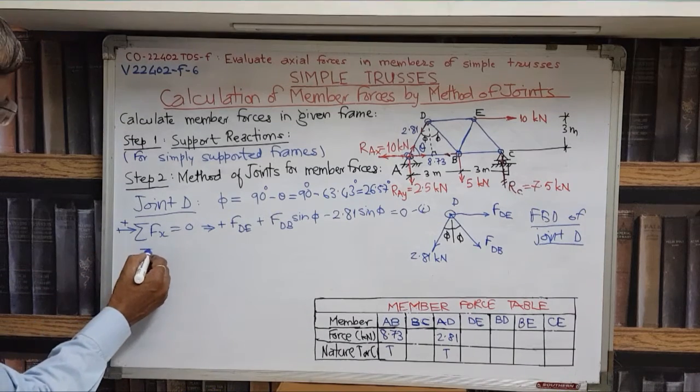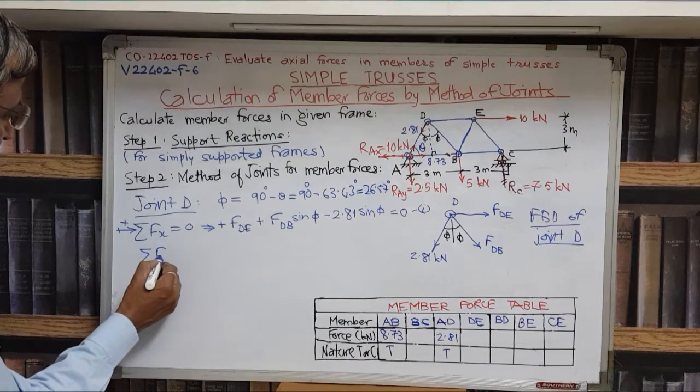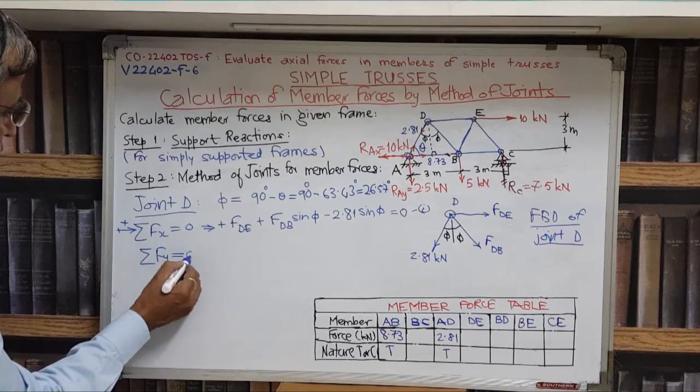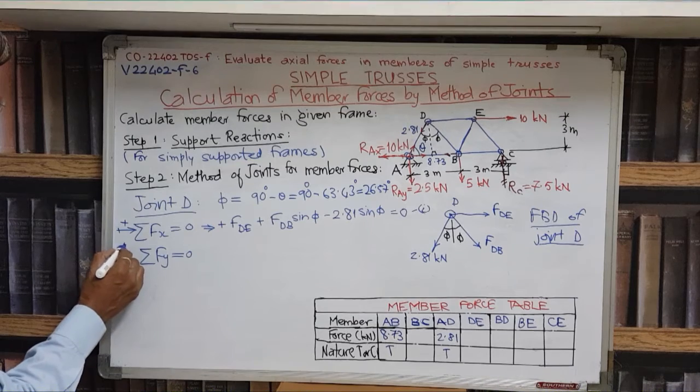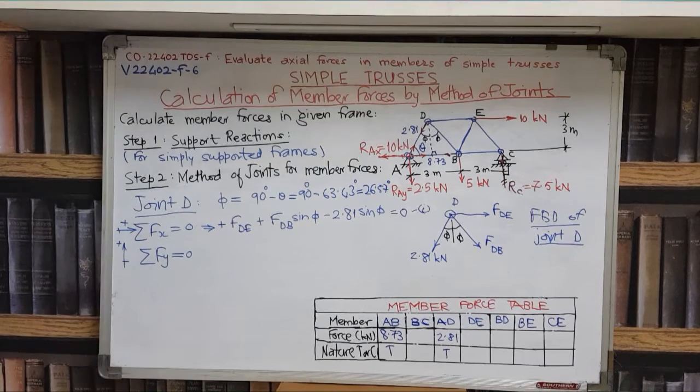Now we will apply the next condition of equilibrium. That is Sigma Fy equal to zero. When we are using the equation we have to specify the sign convention also. The upward forces in y direction will be treated as positive.